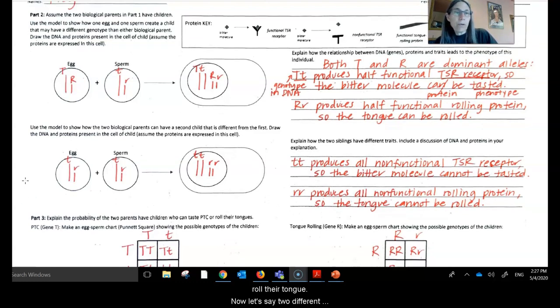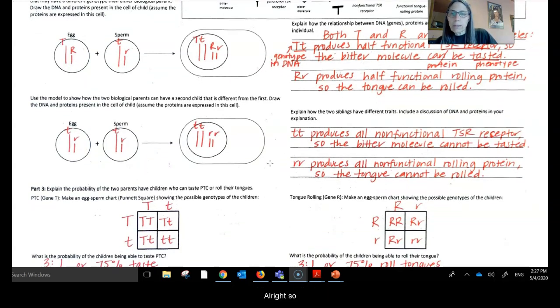Now, let's say two different gametes came together. In this case, it turns out that this is a gamete with two recessive alleles, as is this one. This offspring is going to end up with all recessive alleles, and so the genotype is all recessive alleles. The phenotype will be an individual who cannot taste PTC and cannot roll their tongue.